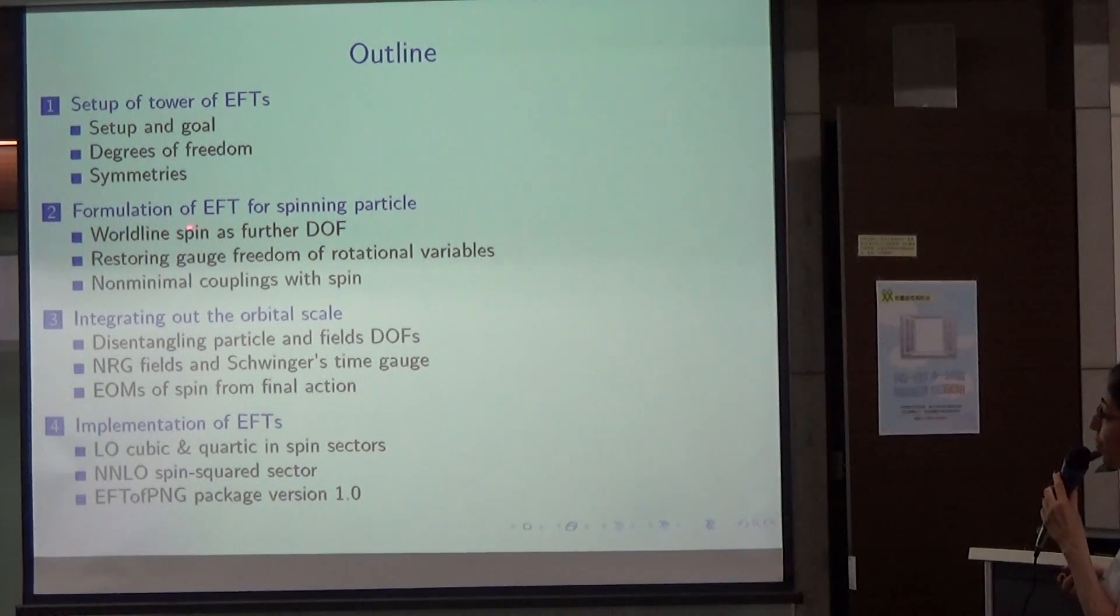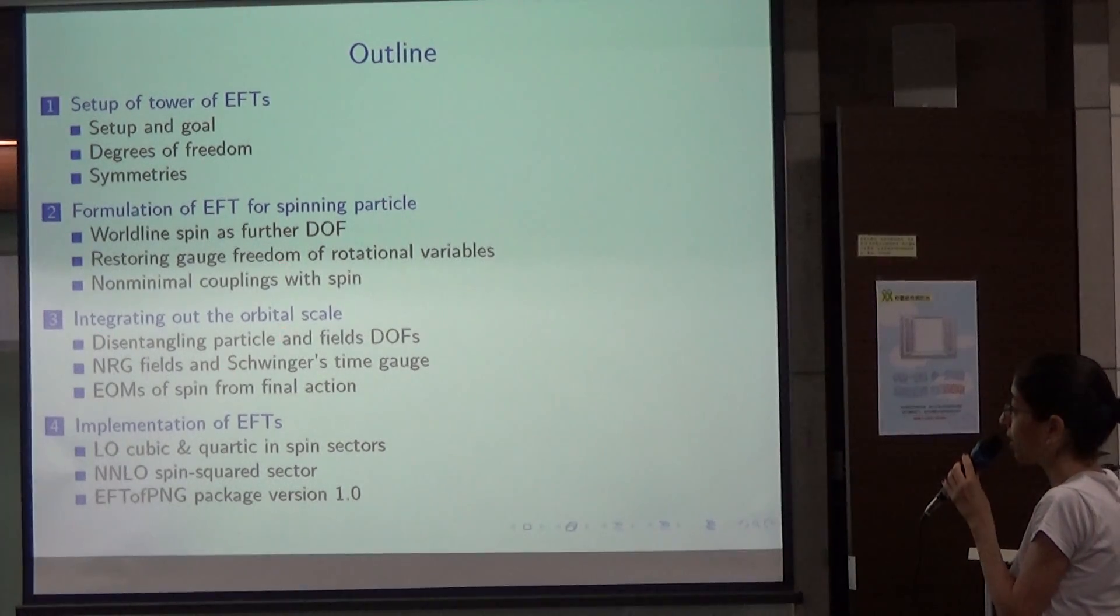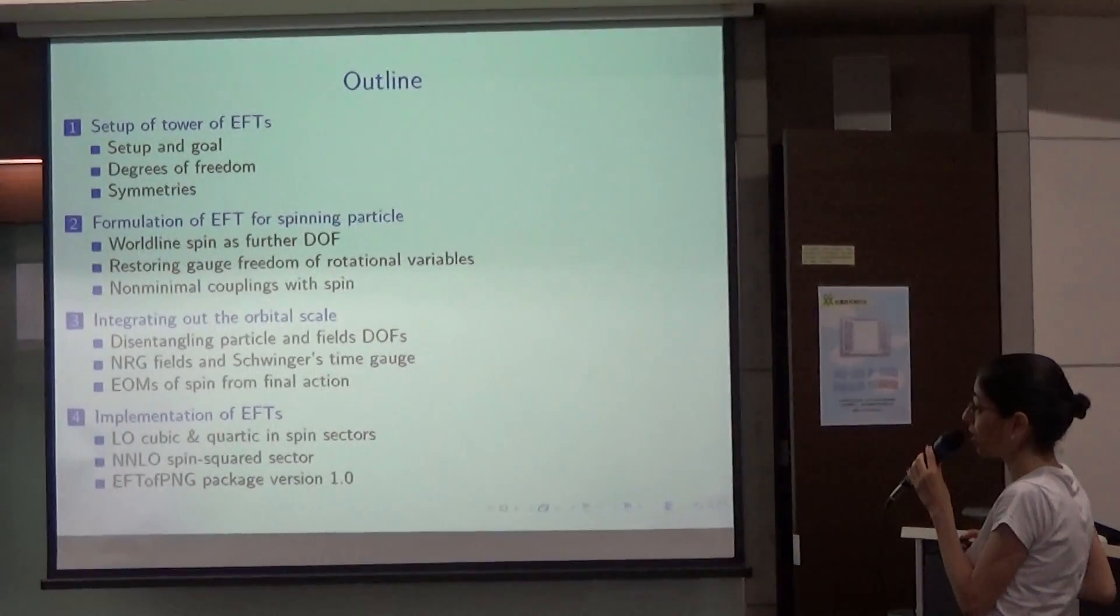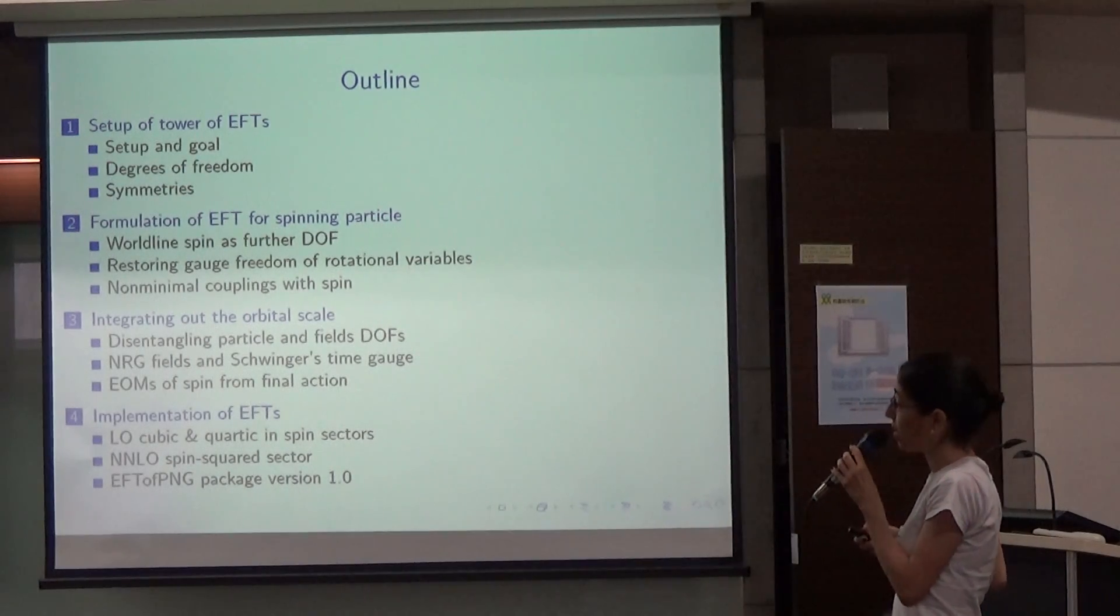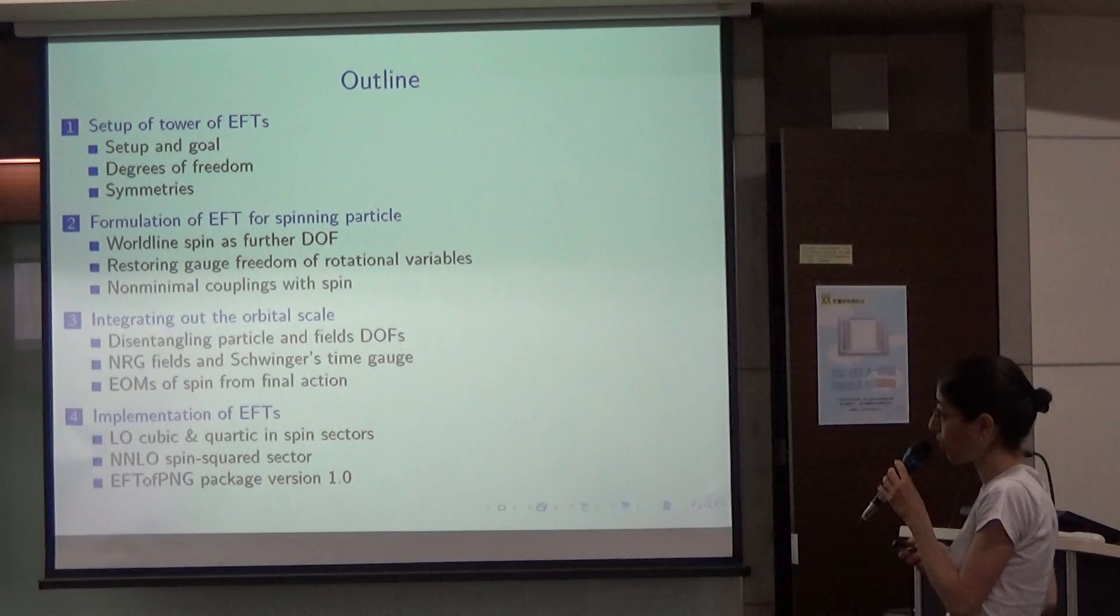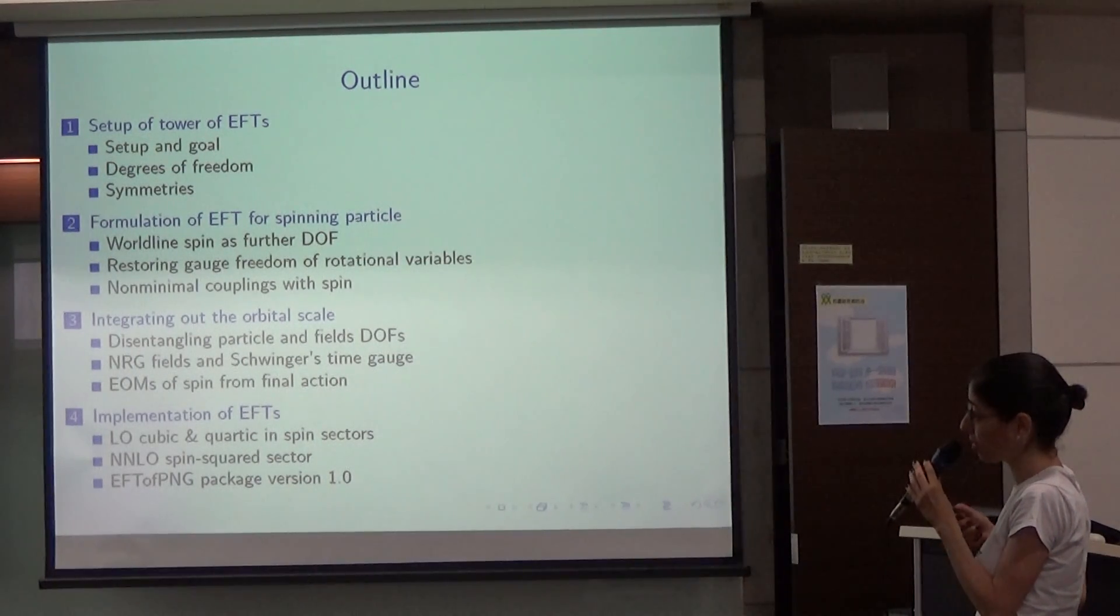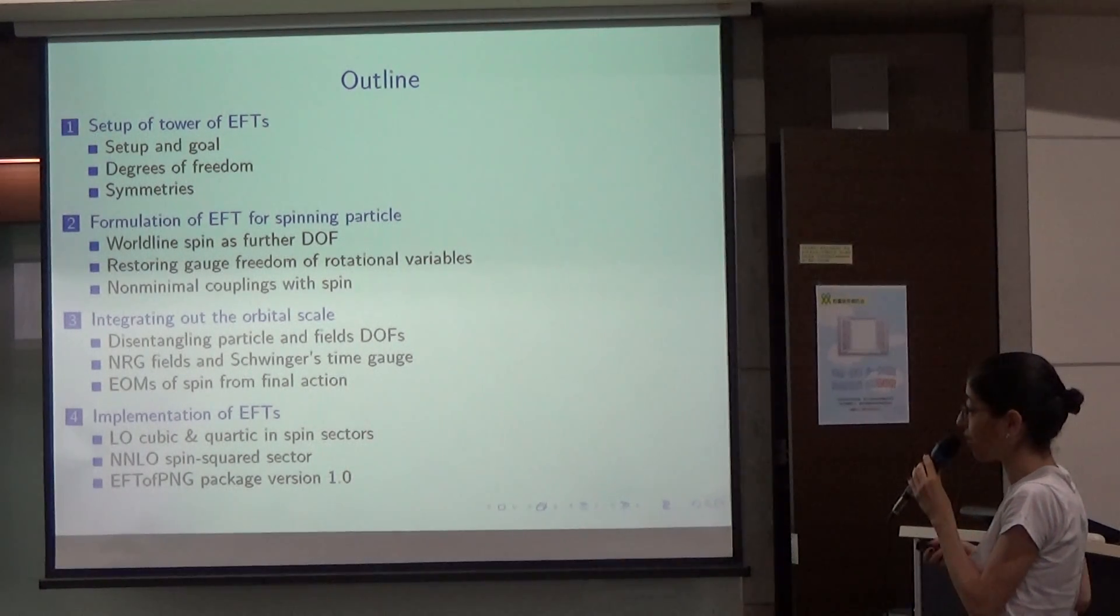So in the second part, I will talk about formulating the first EFT, which is the one-body EFT. Where we want to formulate an EFT for a single compact object which also has spin. And that's not a trivial problem at all. At the next stage, I will specifically focus on, I will try to highlight three facts. One is that we consider the worldline spin as the fundamental degree of freedom. And that's something that we should keep in mind. The second thing is that we restore the gauge freedom of the rotational variables. And that has been a source of ambiguity before we did our work. That's like a new ingredient that we put in that enables us to connect different choices of the spin variable and whatever one chooses to be the rotational variable.